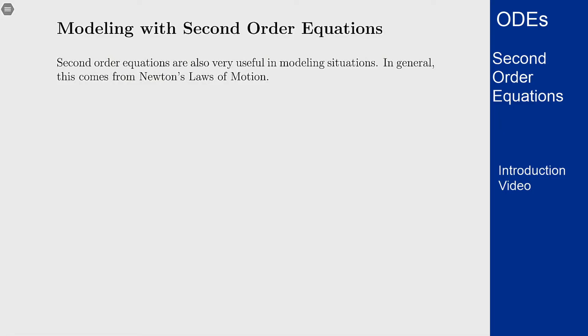First order equations are really useful in terms of modeling because you're modeling a rate of change as a function of the value and time or whatever the other parameter is in your equation. What about second order equations?